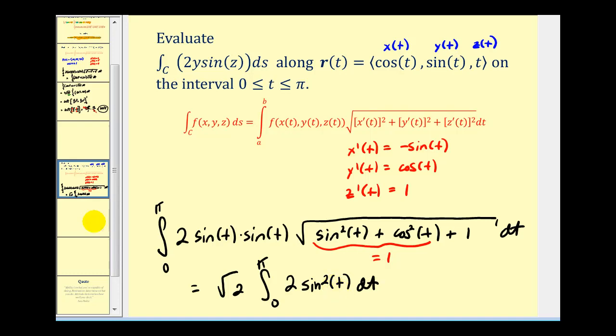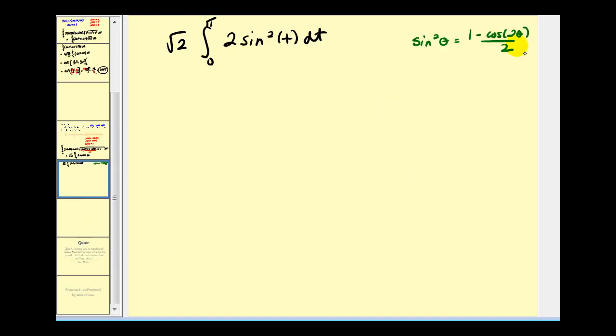And let's go ahead and finish this on the next page. Now here we'll have to apply the power reducing formula for sine squared t. Here's the formula here. Notice the twos here simplify out. So we just have one minus cosine 2t dt.